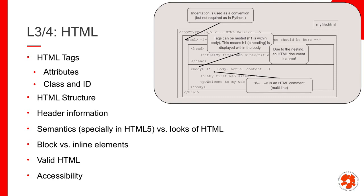We then went into accessibility: using certain means to enrich your HTML so that automated tools can read and understand it — for example, by using semantic tags or attributes that supply extra information, like the alt attribute on an image.